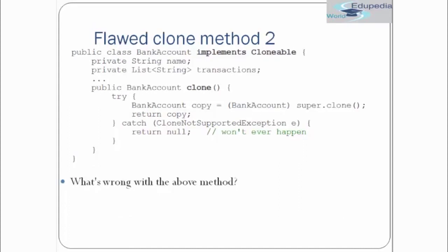Now let's see another implementation of clone — again a flawed one. Here we are implementing the Cloneable interface and having a clone method returning BankAccount. In the clone method we are using super.clone() and using try-catch with CloneNotSupportedException — it looks fine based on our previous implementation. But it is flawed, so try to guess why.